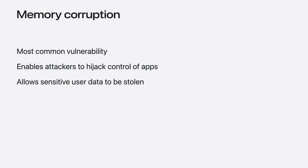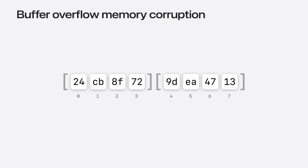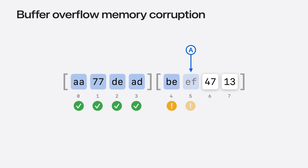One of the most common security vulnerabilities is memory corruption. Attackers can take advantage of memory bugs to hijack control of an app and steal user-sensitive data. For example, buffer overflow corruptions write past the bounds of a buffer and corrupt memory in another allocation. Then, when another pointer reads that memory, it can result in data corruption and hard-to-reproduce crashes. But even worse, by carefully crafting the write, an attacker may be able to trick your app to execute arbitrary code under their control.